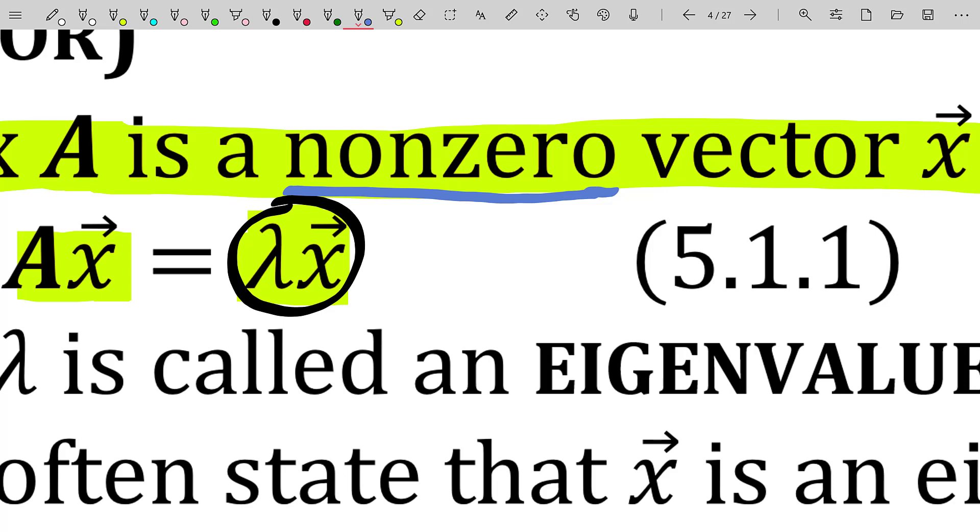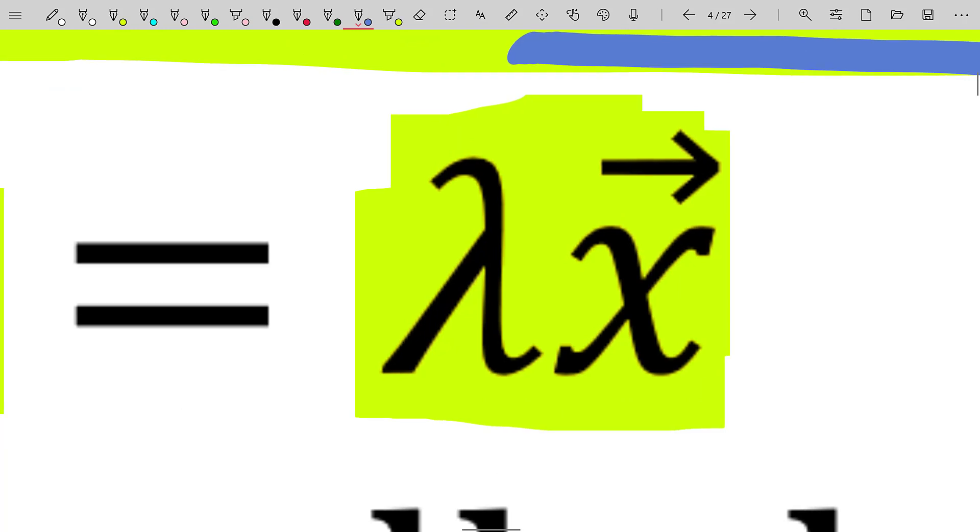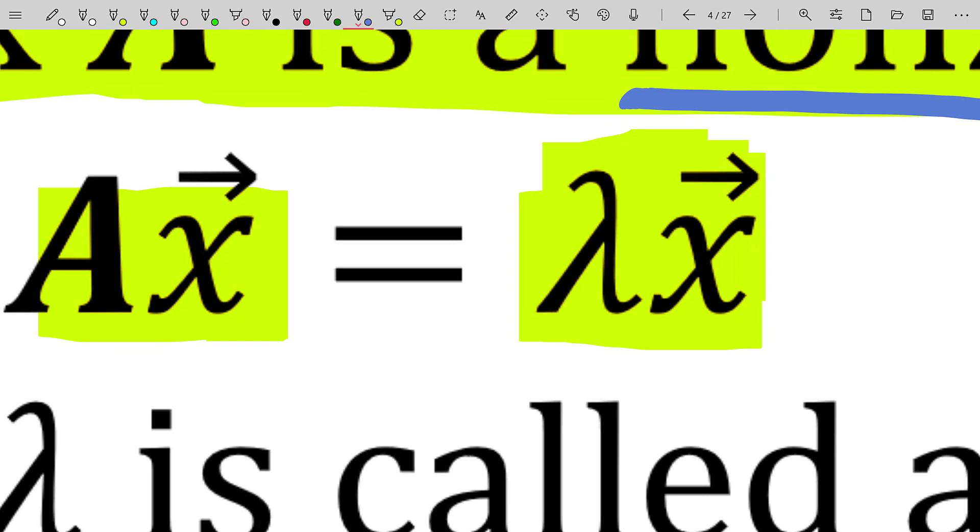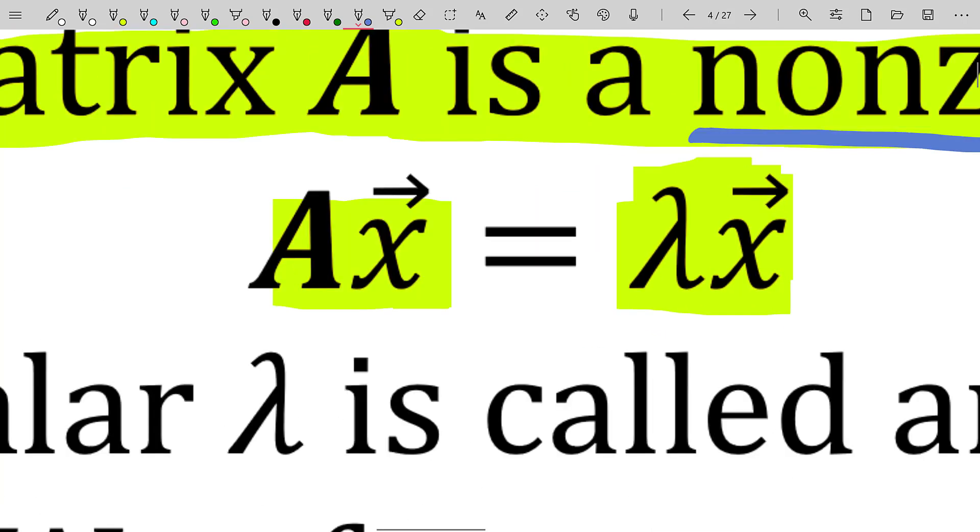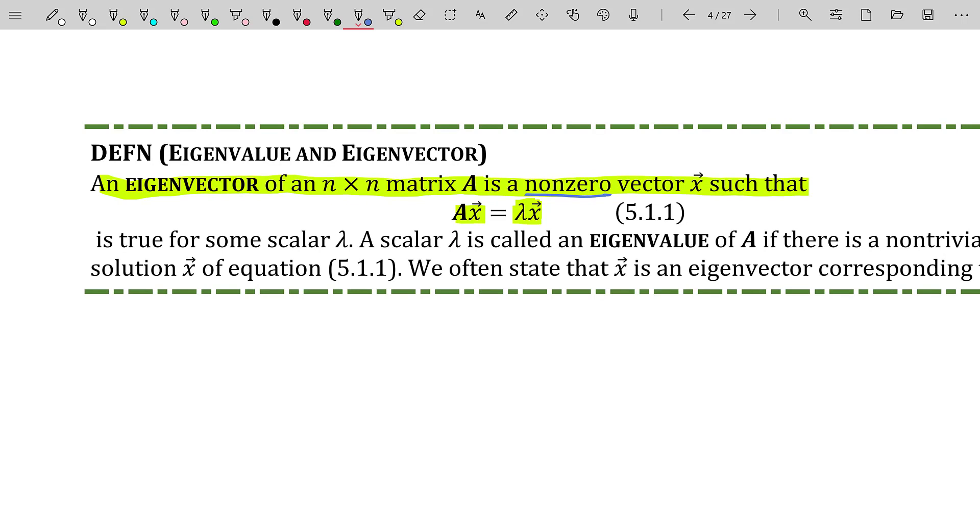So while we're at it and we're defining things here, I'd really like to define what that lambda is. That's the Greek lowercase letter lambda. And it's very traditional in mathematics to use that lambda when you talk about the associated scalar that gets popped out when you multiply A times that eigenvector. That scalar is something you call the eigenvalue. So just rereading the definition very quickly. An eigenvector of a square matrix is a non-zero vector such that A times that vector is some scalar times that vector. And that scalar is called an eigenvalue of A.